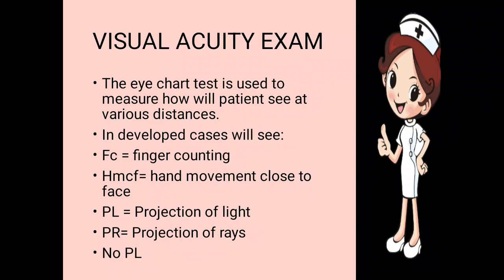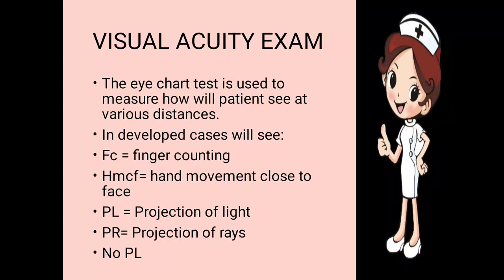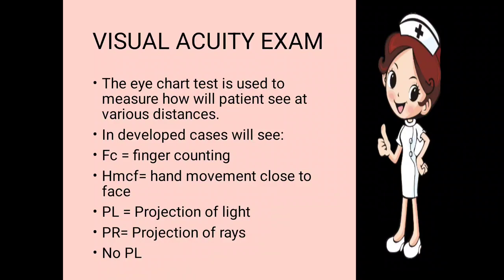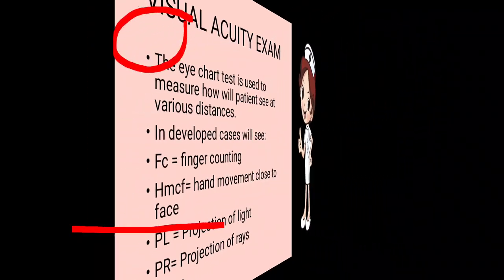If the patient cannot respond to projection of rays or projection of light, we check whether the torch light is visible — if not visible, we record 'no PL,' meaning no vision in that eye. This was all about visual acuity examination, by which we determine if the patient will be able to see after cataract surgery. In cases of no PL, most persons will not regain vision, so no expectation should be kept from surgery.